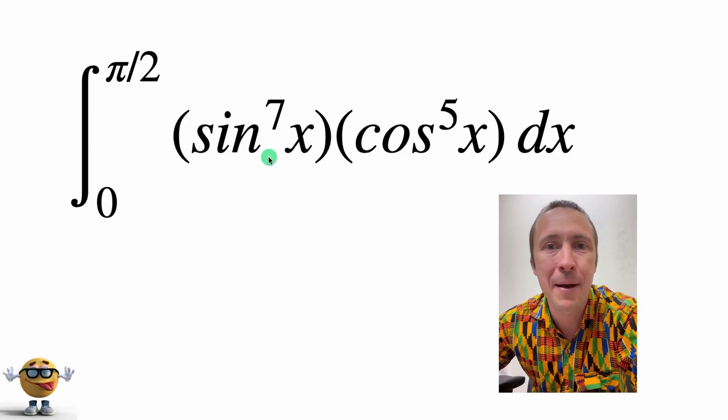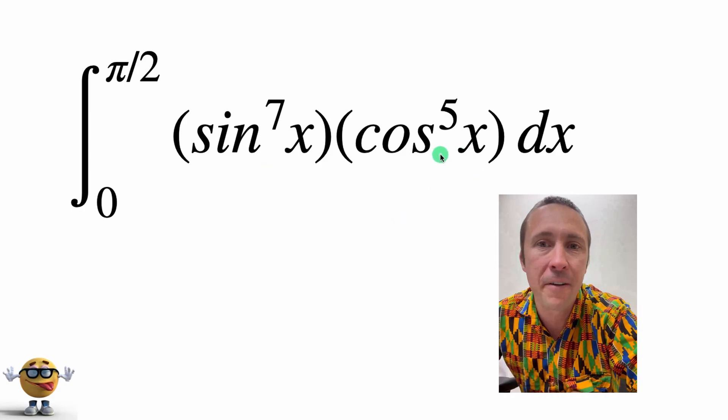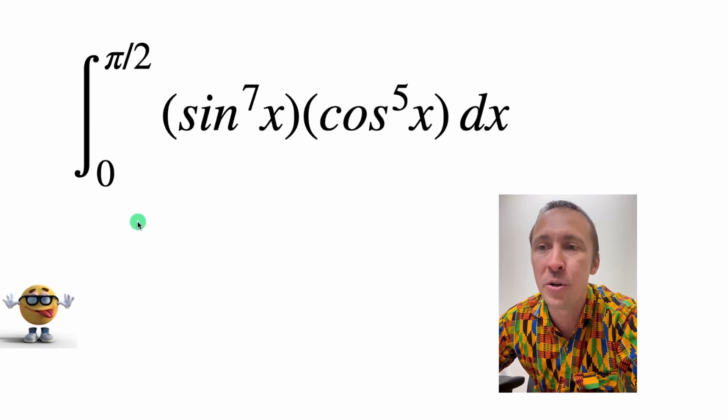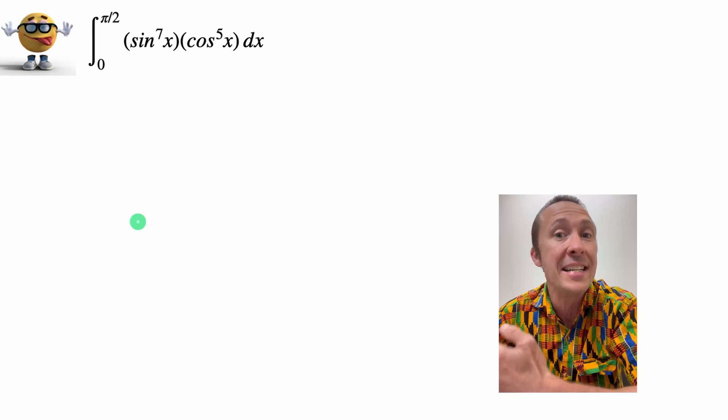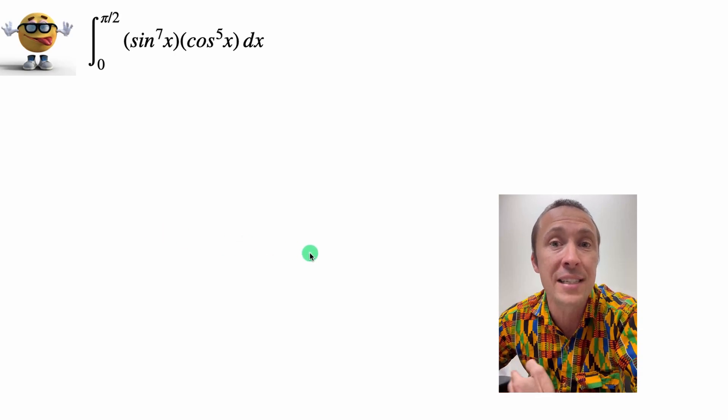My friends, we're going to integrate sine to the power of 7 times cosine to the power of 5 from 0 to pi over 2, and it's going to be awesome because this integral is all about identities, and I'm going to walk you through it step by step.